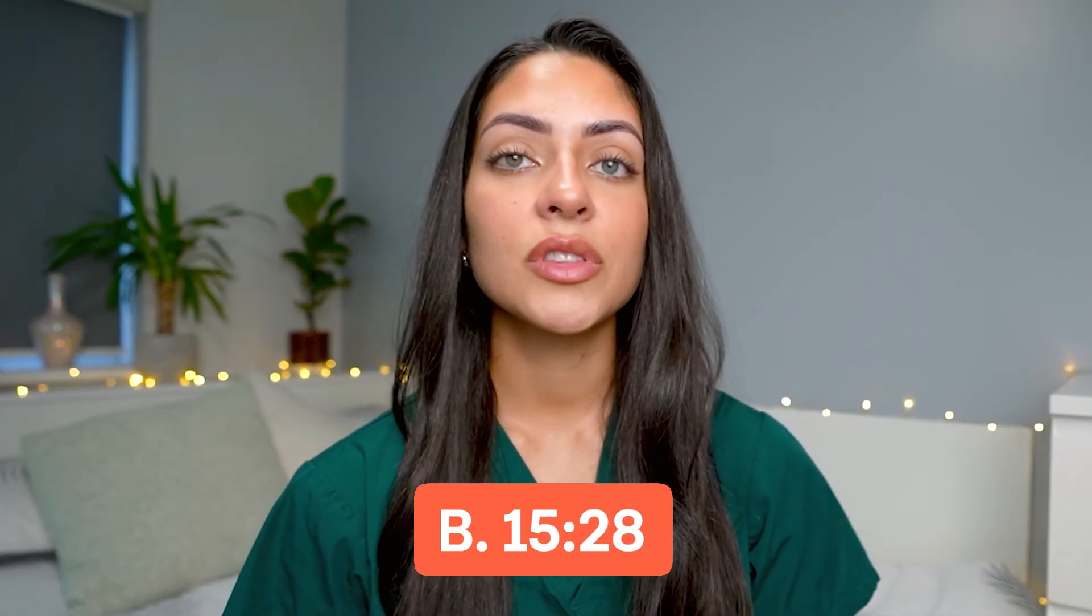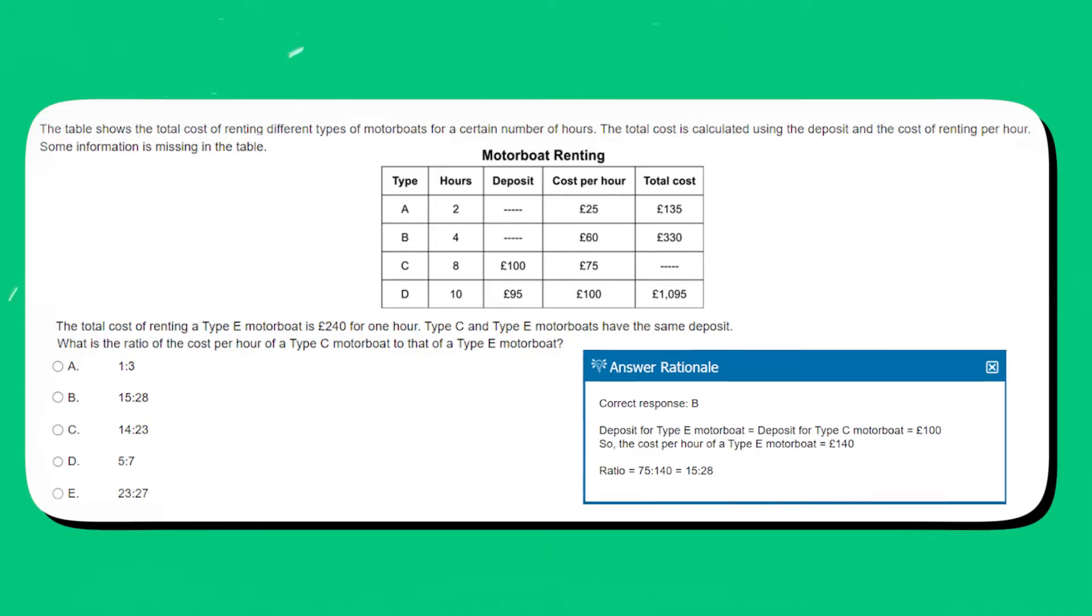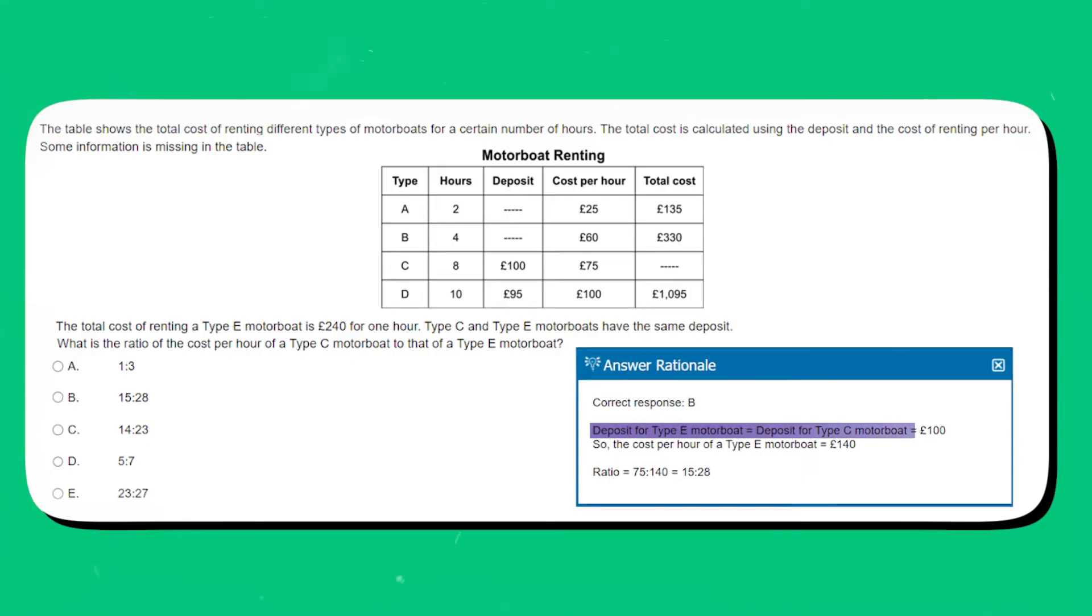The correct option here is B, 15 to 28. This is because the deposit for type E is the same as the deposit for type C, which would be £100. So the cost per hour of a type E motorboat is £140, giving you a ratio of 75 to 140, which equals 15 to 28.